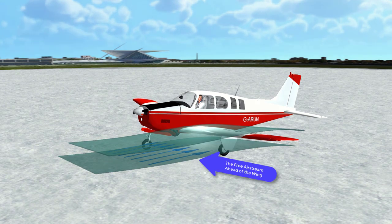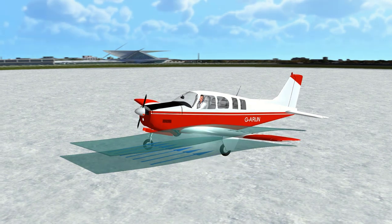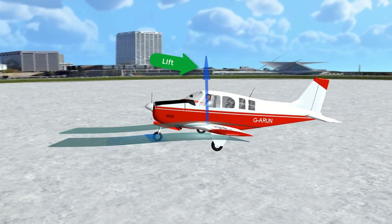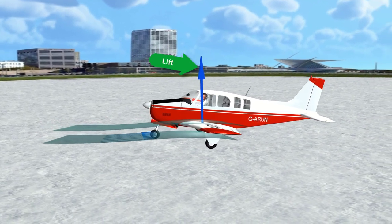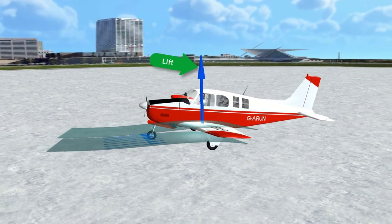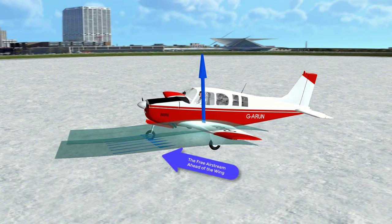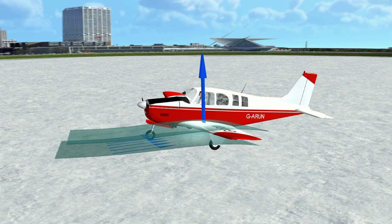Lift is represented by the tall vertical blue arrow, which is nearly perpendicular to the relative wind in the free airstream ahead of the wing, as shown by the horizontal blue arrows. Now let's increase the angle of attack and watch what happens to the relative wind in the local vicinity of the wing.